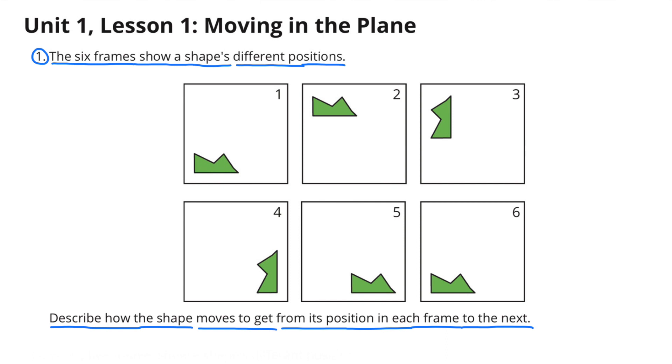Number 1. The six frames show a shape's different positions. Describe how the shape moves to get from its position in each frame to the next.